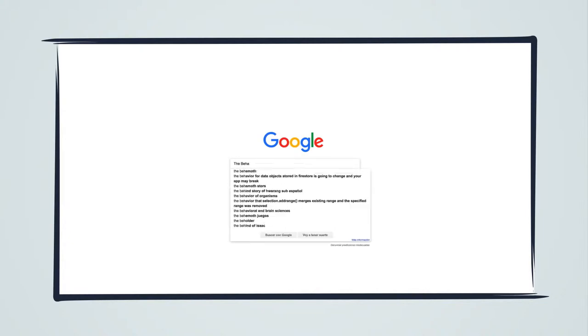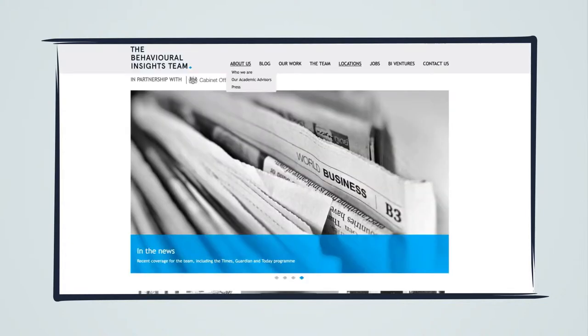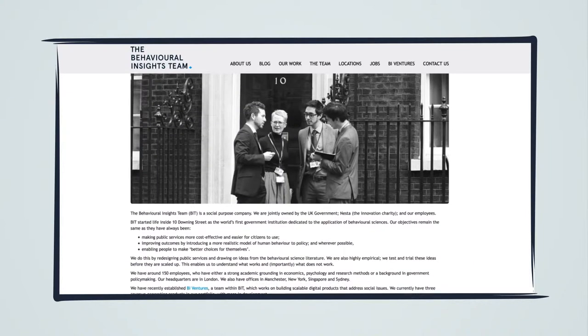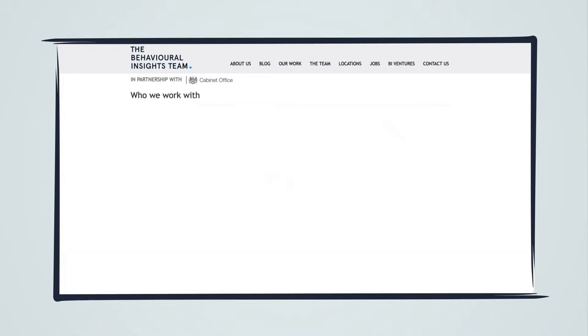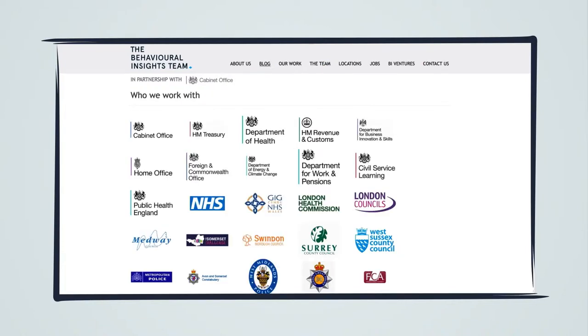According to their own description, the Behavioral Insights Team is a social purpose company. They are jointly owned by the UK government, Nesta and their employees. The main goal of this team is to influence and change people's behavior in terms of decisions and actions based on the potential of behavioral economics.